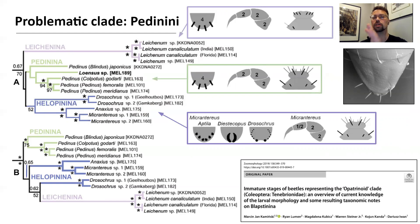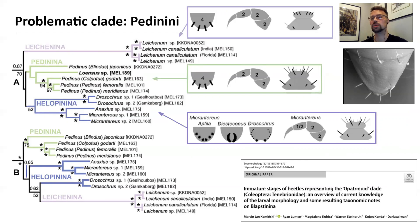However, in order to fully resolve the relations within this tribe, a new phylogenetic analysis — probably based on more comprehensive molecular data — is needed. Furthermore, a more diverse set of Pedinoid members should be included to significantly challenge the status of Jalapenina.